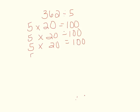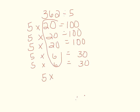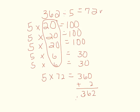I know that 5 times 6 equals 30, and that gets me to 330. So another 5 times 6 gives me another 30. Now I know that 5 times 72 equals 360, and I need two more to make my dividend. So 362 divided by 5 is equal to 72 with a remainder of 2.